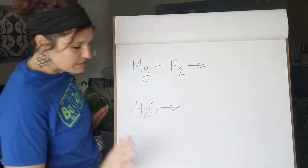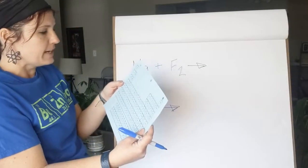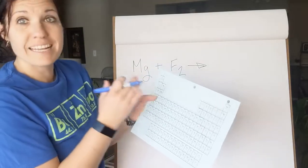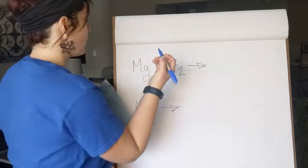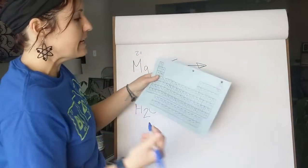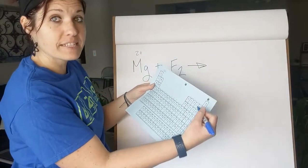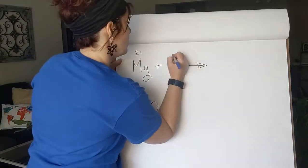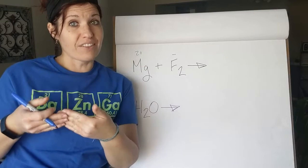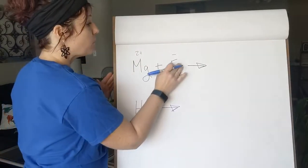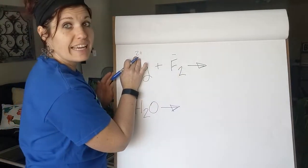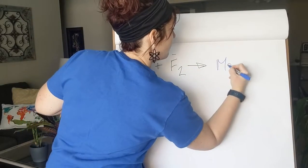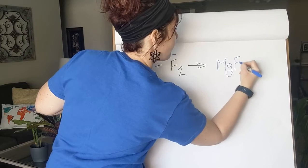For magnesium plus fluorine, if we check our periodic table, magnesium is in column two, so it has two valence electrons and always forms a plus two charge. Fluorine is a halogen — it has seven valence electrons, so it always forms a minus one charge. When magnesium and fluorine come together, we need two fluorine ions to cancel out the positive two magnesium. So we end up with MgF₂.